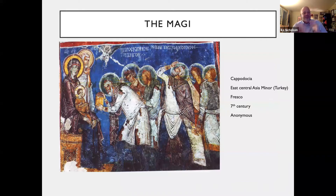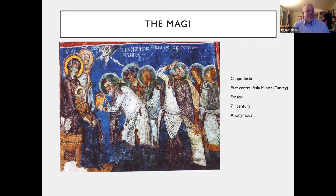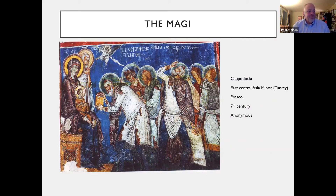Up until this point, we have seen mainly three Magi. The reason there are three Magi is because there are three gifts — gold, frankincense, and myrrh — but nowhere in scripture does it say there were three Magi; it only says there were three gifts. Here's an example from Cappadocia, which is Turkey, in the 7th century, where we don't know who did this, but we have six Magi and three gifts. Another wonderful thing we begin seeing in the 7th century: we still have the Madonna, the Christ child — not the infant — but lo and behold, look who has showed up: we now finally have Joseph on the scene.